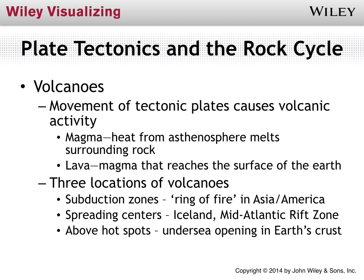We have subduction zones between North America and Asia called the Ring of Fire — one area of active volcanic activity. We also have another area of volcanoes at spreading centers in Iceland and the mid-Atlantic rift zone. And we also have volcanoes created above hot spots, which could be those undersea openings in the Earth's crust. So volcanoes occur in subduction zones, at spreading centers where areas are moving away from each other, and above hot spots.